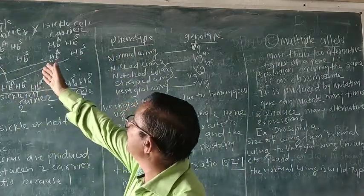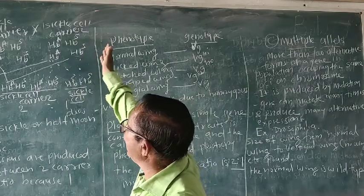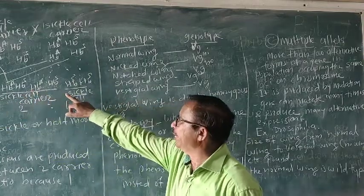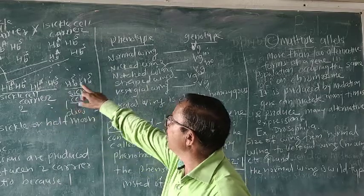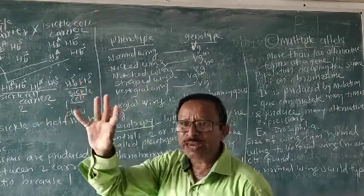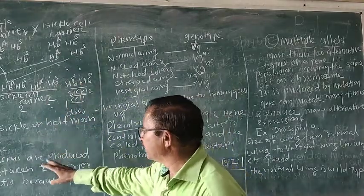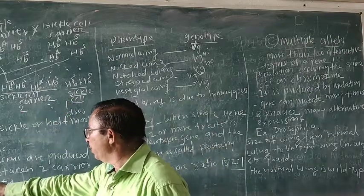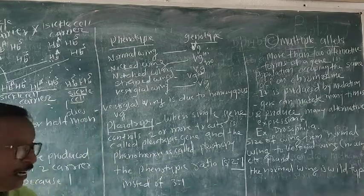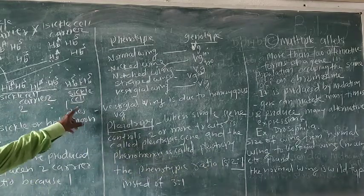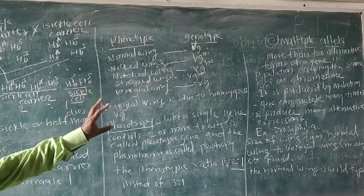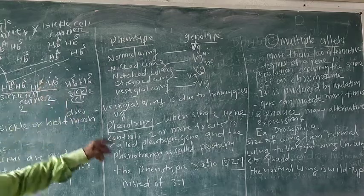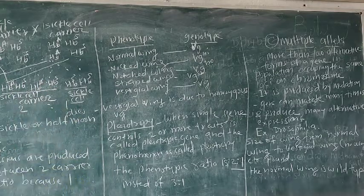Example: sickle cell carrier male or female marrying a sickle cell carrier gives different types of expression — HbA HbA normal, HbA HbS sickle cell carrier, HbS HbS sickle cell anemia. Instead of getting a 3:1 ratio, we get a 1:2 ratio because the last one dies. The genotypic ratio is 1:2:1 but this one dies due to recessive lethality, so the surviving ratio becomes 1:2. We have completed multiple alleles with example Drosophila, and pleiotropy with example sickle cell anemia. Thank you.